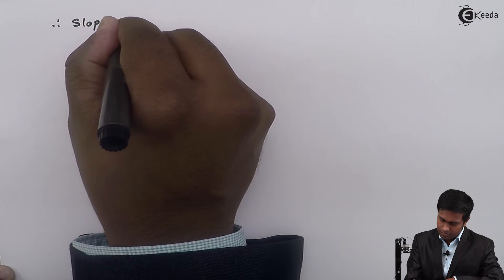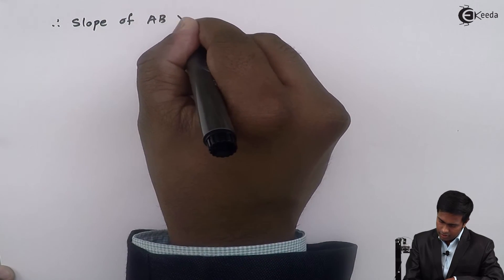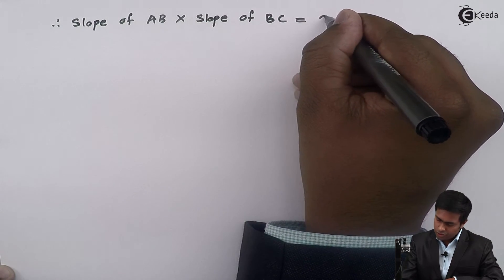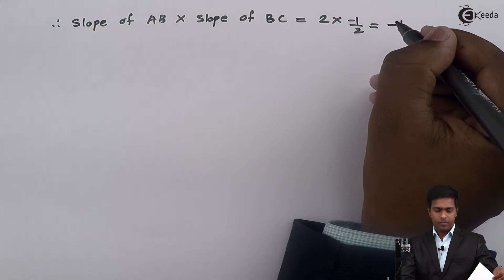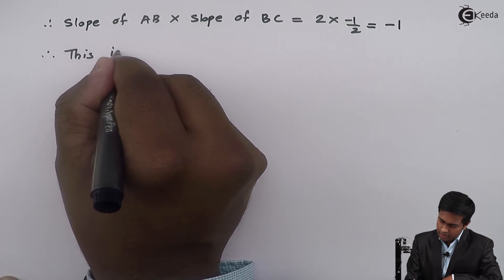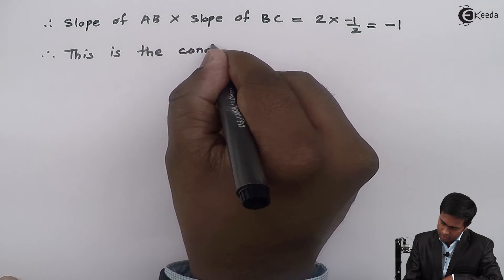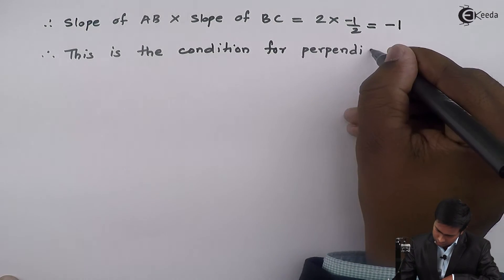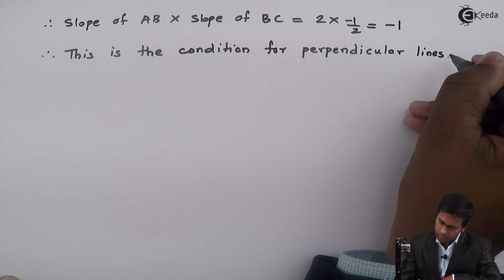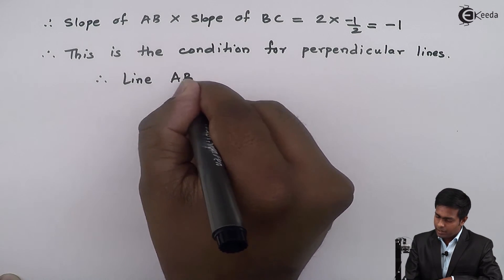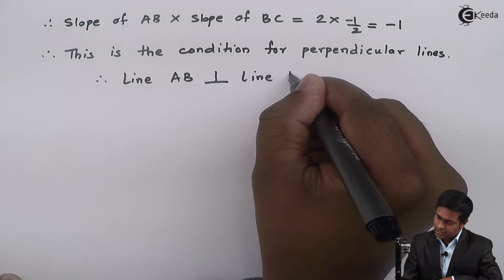Therefore, slope of AB × slope of BC = 2 × (-1/2) = -1. This is the condition for perpendicular lines. It means line AB is perpendicular to line BC.